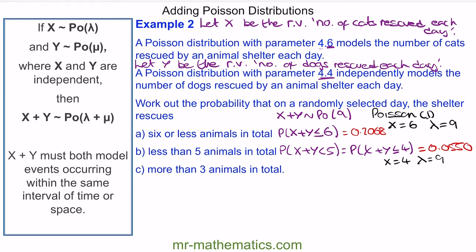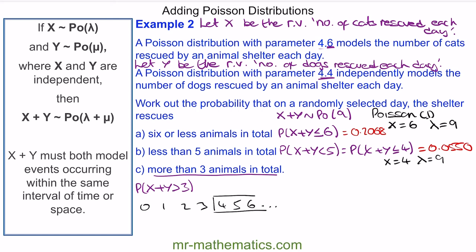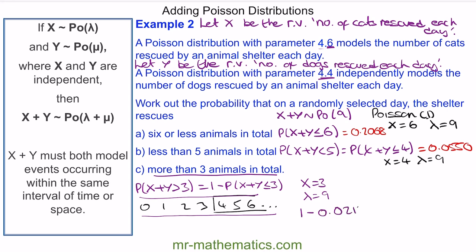For part C, we want more than three animals in total — the probability of x plus y being greater than 3. Listing the possible outcomes: 0, 1, 2, 3, 4, 5, 6, and going on. What we want is greater than 3, which is the same as 1 minus the probability of x plus y being less than or equal to 3. On our calculators, x equals 3 and lambda equals 9. So we have 1 minus 0.0212, which gives us a probability of 0.9788.